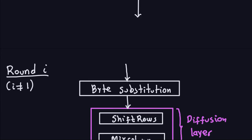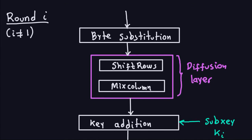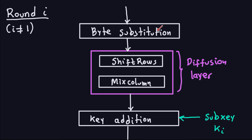For a general round i, where i is not equal to one — any round that is not the first — it's going to have three layers only. These are: the byte substitution layer using the S-box or lookup table, the diffusion layer performing the permutation, and the key addition layer using the sub-key from the key schedule, similar to DES. So any round that is not the first one has three layers, while the first round is the only one with four.